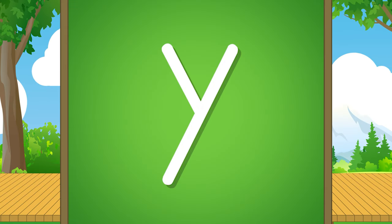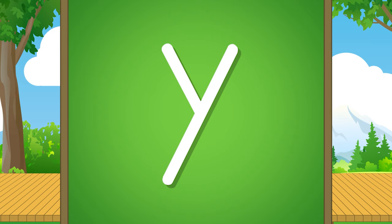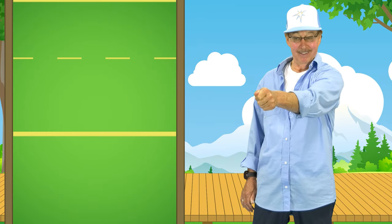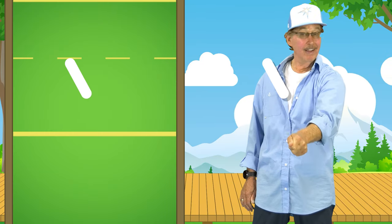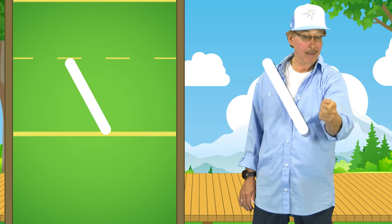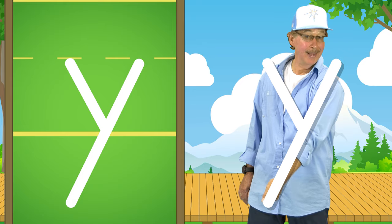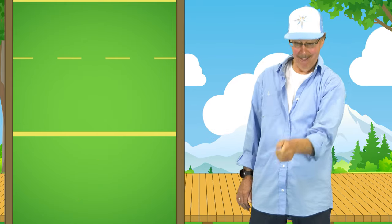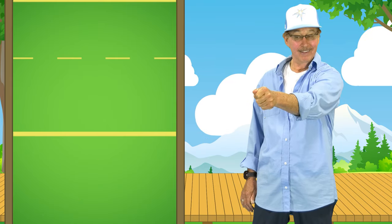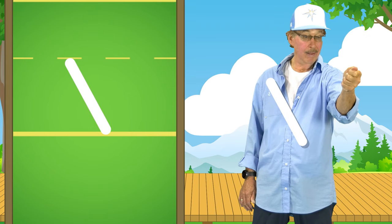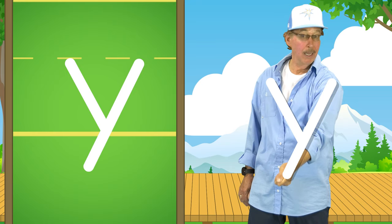This is a lowercase Y. Look and see. Write a lowercase Y in the air like me. Start in the middle, slant down to the floor. Lift over to the middle, slant down past the floor.